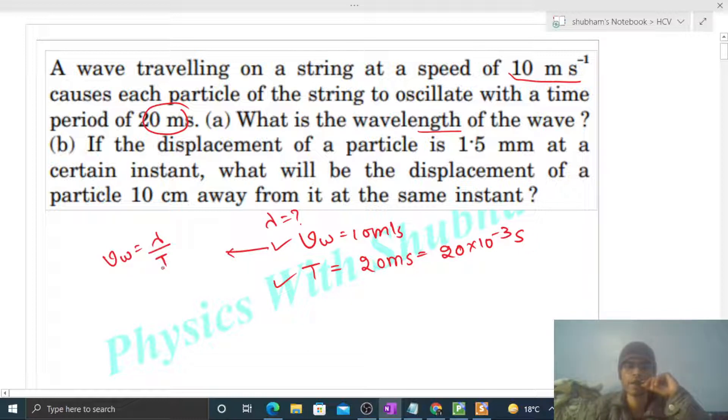So you see, the wave speed is simply wavelength divided by time period. So wavelength is simply wave speed into time period. Wave speed is 10 into time period is 20 into 10 raised to the power minus 3. So this will be 0.2 meter or you can say 20 centimeter, right?